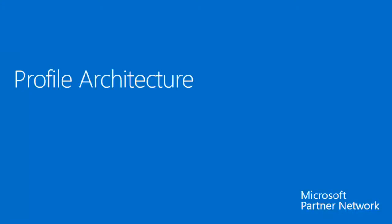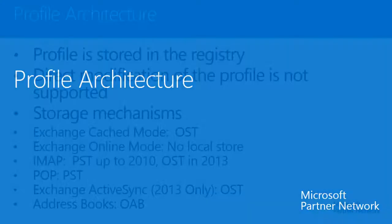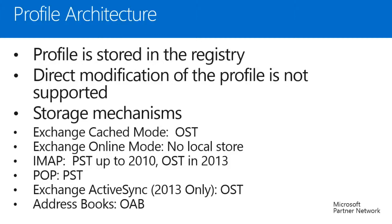Let's get started by talking about profile architecture. The Outlook profile is stored in the registry and it contains pointers to various things including other items that are stored within the file system and configuration of accounts.